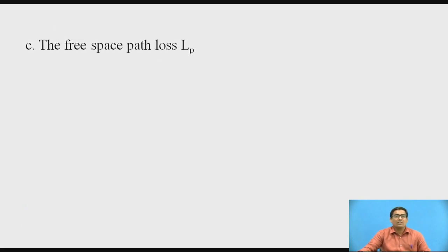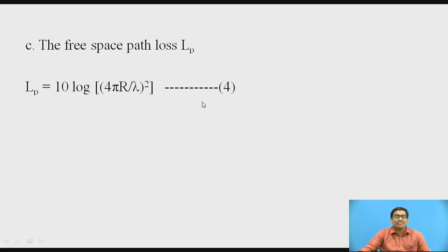Now we calculate the free space path loss, Lp. The formula is: Lp = 10 log[(4πr/λ)²] (equation 4). After putting in the values of r and λ, we get Lp = 207.2 dB.